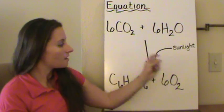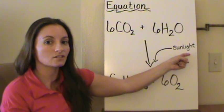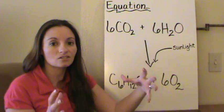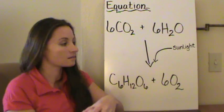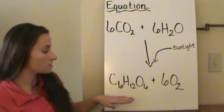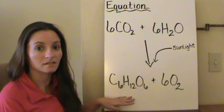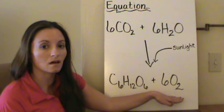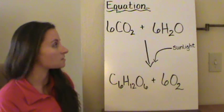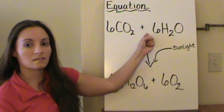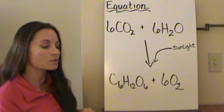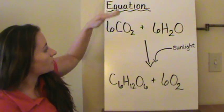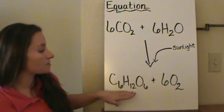Plants take that carbon dioxide and water, and through the energy of sunlight, that energy actually breaks apart the bonds of these two molecules. As it breaks apart those bonds — that's the energy used for the chemical reaction — it then creates products. The products are glucose, C6H12O6, which is a carbohydrate, and 6 O2 molecules. So the equation for photosynthesis is: 6 CO2 + 6 H2O + sunlight → C6H12O6 + 6 O2. Plants need carbon dioxide and water and they produce glucose and oxygen.